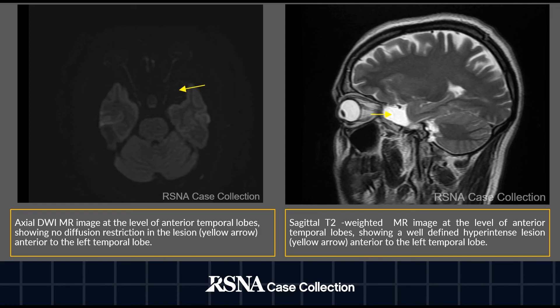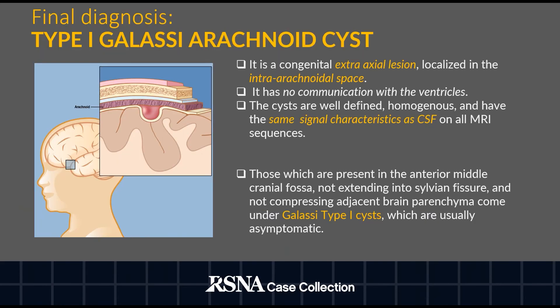This is the lesion in the sagittal plane. So what could be the diagnosis? This is a well-defined lesion, hyperintense on T2, following the CSF signal intensity, extraaxial in location. The diagnosis is arachnoid cyst — specifically a Type 1 Galassi arachnoid cyst. It is not extending into the sylvian fissure and is not compressing the adjacent brain parenchyma.